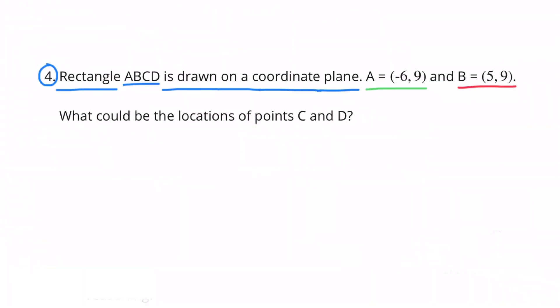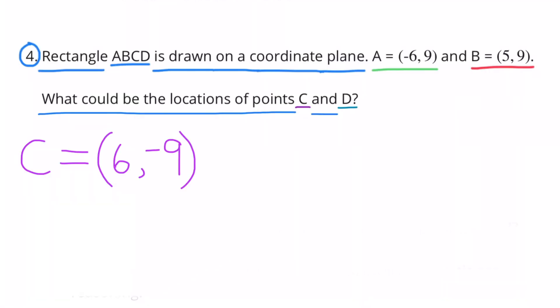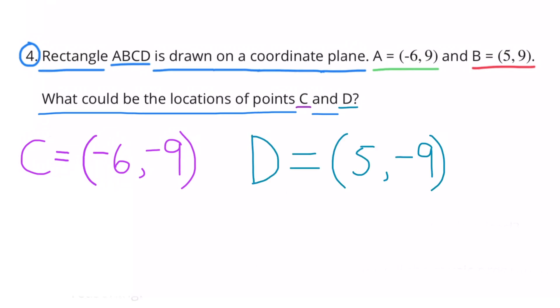Number 4. Rectangle ABCD is drawn on a coordinate plane. A equals negative 6 and 9 and B equals 5 and 9. What would be the locations of points C and D? Well the location for C could be at 6 and negative 9 and the location for D could be at 5 and negative 9.